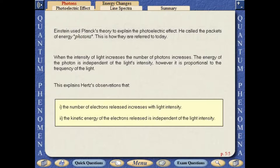Einstein used Planck's theory to explain the photoelectric effect. He called the packets of energy photons, and this is how they are referred to today. When the intensity of light increases, the number of photons increases. The energy of the photon is independent of the light's intensity; however, it is proportional to the frequency of the light.